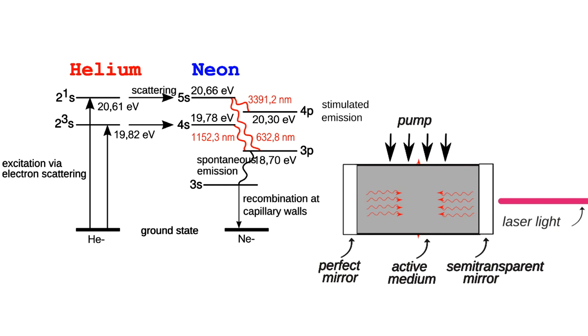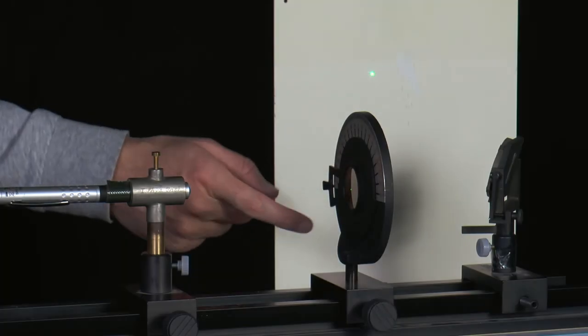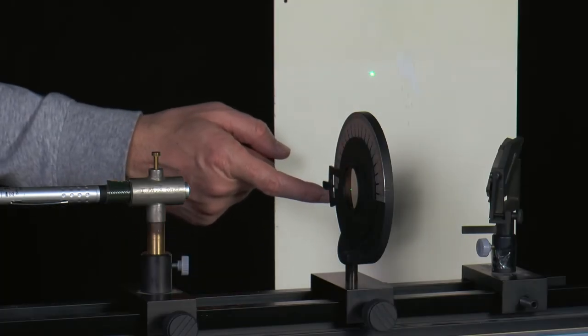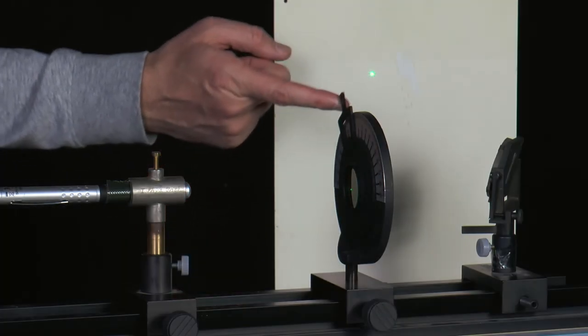Since solid-state lasers do not need exit windows for the transition from the active medium to the air, to the mirror and back again, the laser light is also not linearly polarized. Linear polarization is therefore not a property of every laser but depends on the design of the laser.